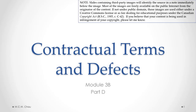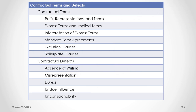Hello, this is Whelan Chow, and welcome to Contractual Terms and Defects, Module 3B, Part D. In this part, we'll look at the first two contractual defects of an absence of writing and misrepresentation.